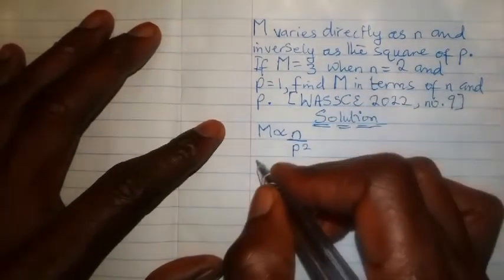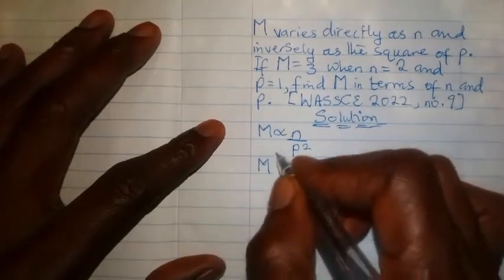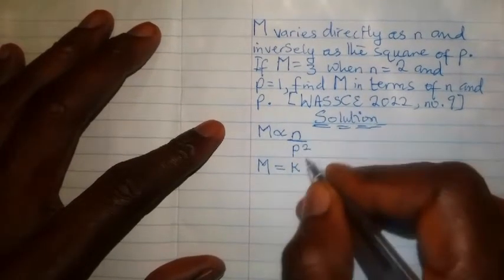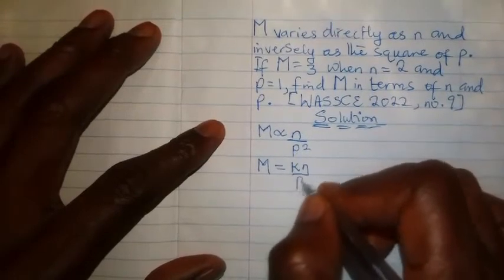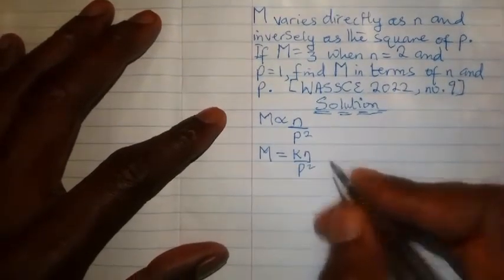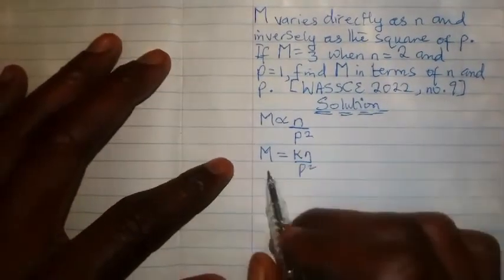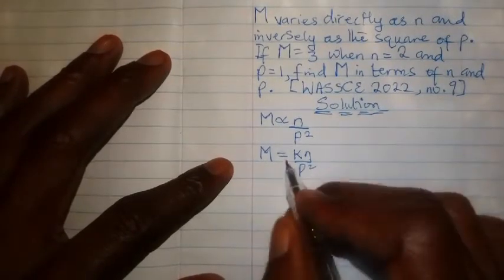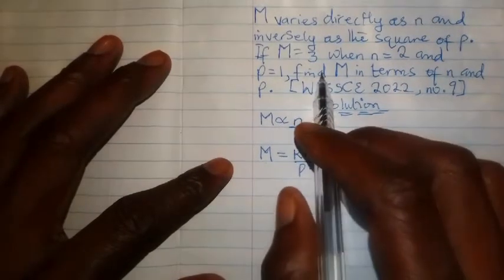thing we do before we go on is to write this as an equation by saying m equals k times n upon p squared. This is what you must do. Then at this point you show the relationship between m and p squared. Now we need to get the value for k, which is why they gave